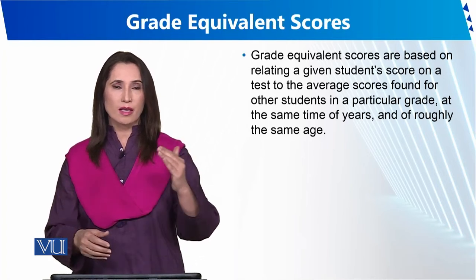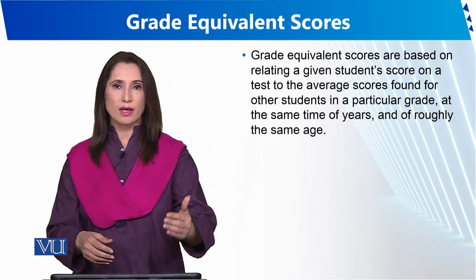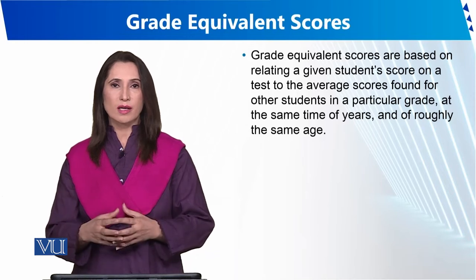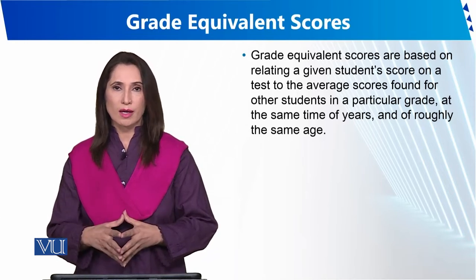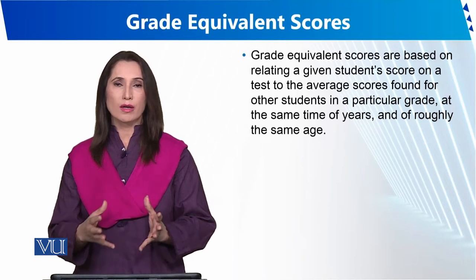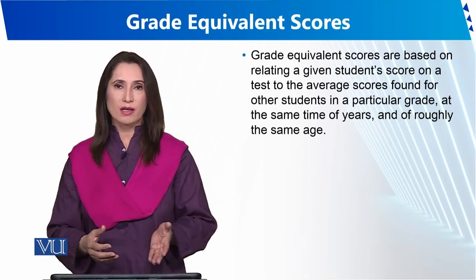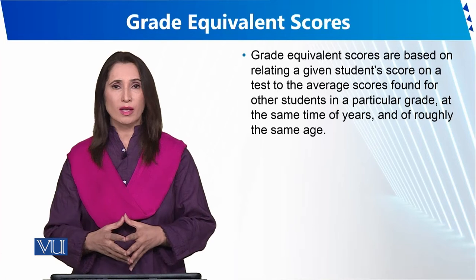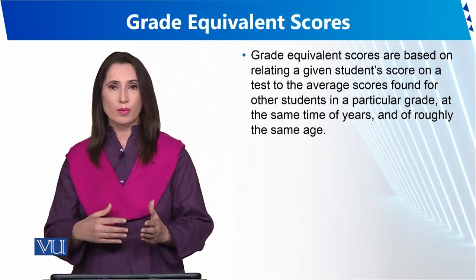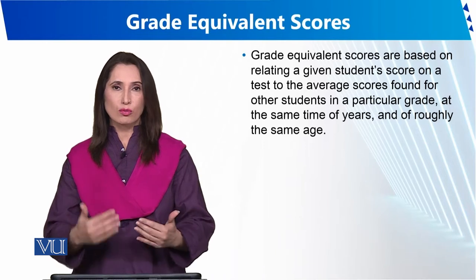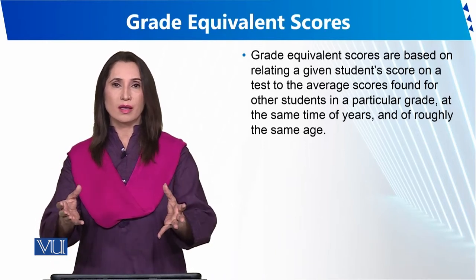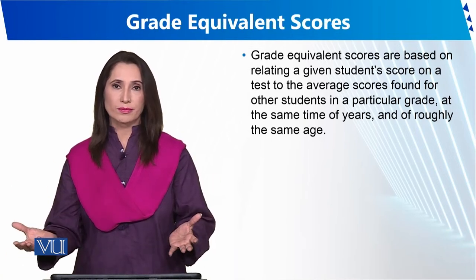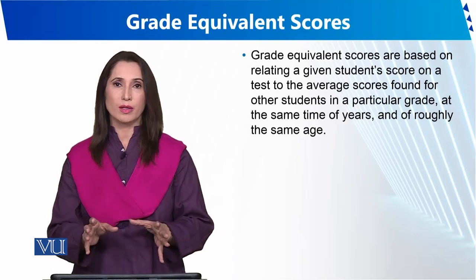यह देखना चाहिए कि first term, second term, और third term में score क्या था। Grade equivalent scores तीनों terms की average निकाल कर बता सकते हैं कि एक course में performance same आ रही है, but he is getting low score in this particular subject. मेरी observation है कि बच्चे जिस teacher को पसंद नहीं करते, उस subject को भी मुश्किल पाते हैं और book खोलना पसंद नहीं करते।